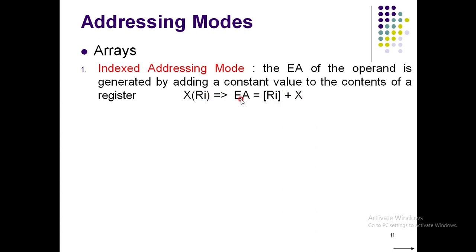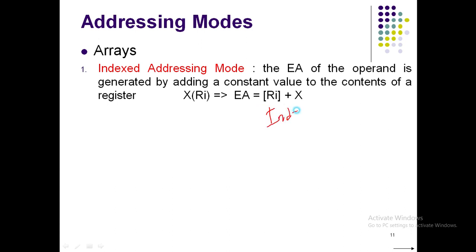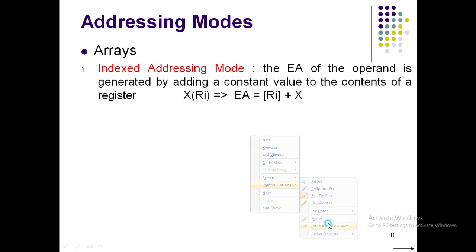So if we write X(Ri), the effective address equals the contents of register Ri plus the constant X. This Ri is called an index register, which is essential for array addressing modes. The constant X can be either an offset or a base address — so we come across two important concepts here.